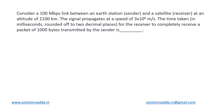The next question: we have been given a 100 Mbps link between an Earth station (the sender) and a satellite (the receiver) at an altitude of 2100 kilometers. The signal propagates at a speed of 3×10⁸ meters per second, and we need to determine the time taken in milliseconds, rounded to two decimal places, for the receiver to completely receive a packet of size 1000 bytes transmitted by the sender.